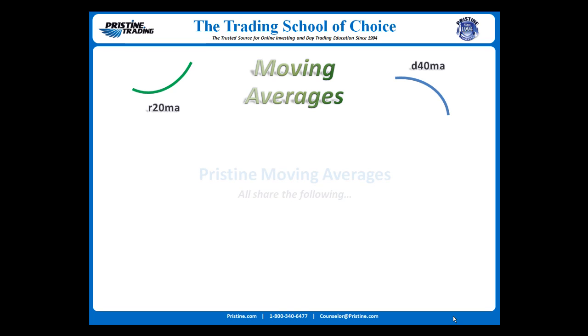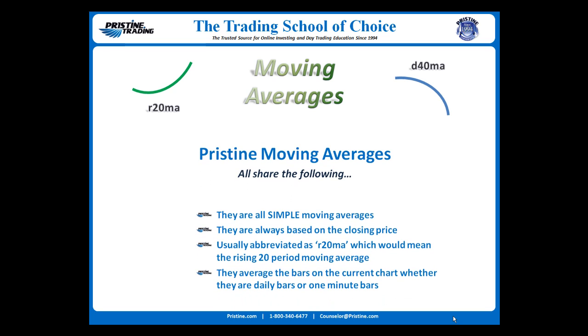At Pristine, moving averages are always simple moving averages and are based on the closing price. Why simple? Because it really doesn't matter, so stick with simple.